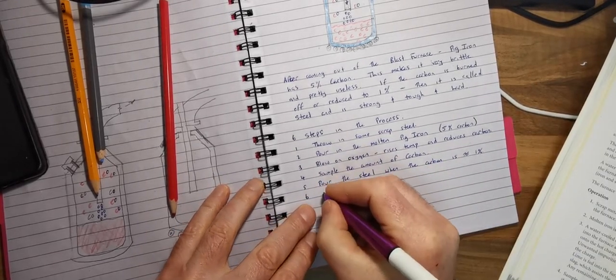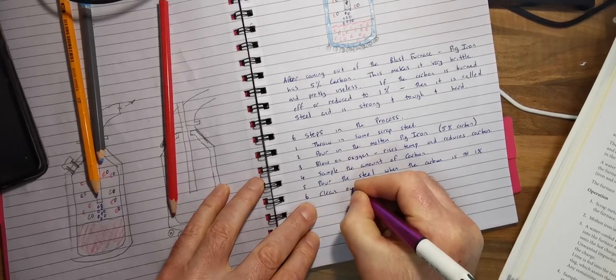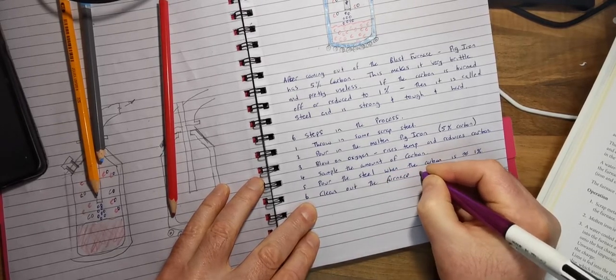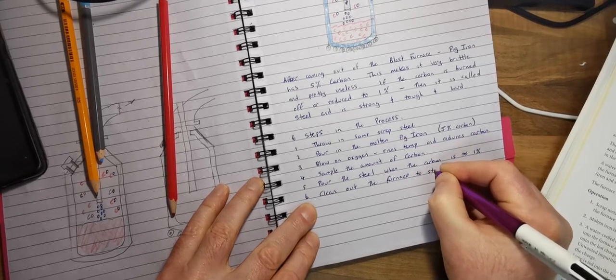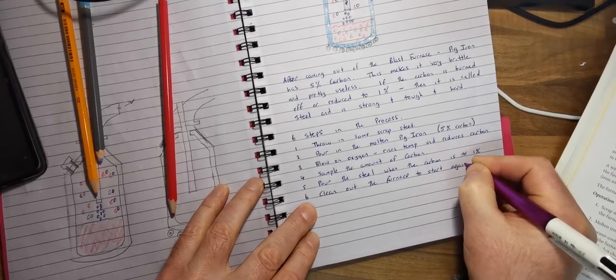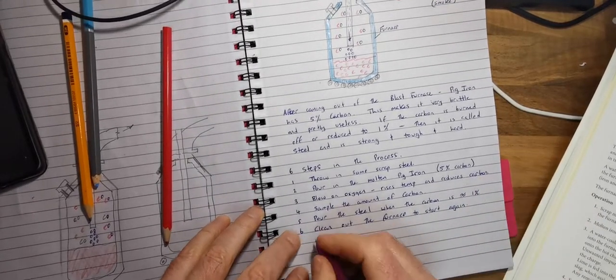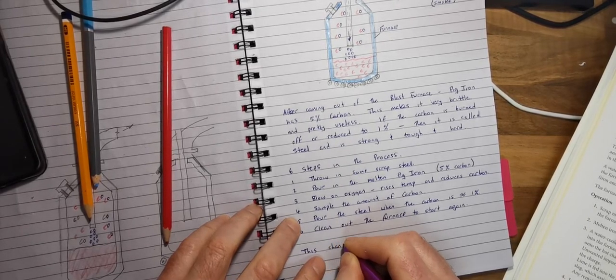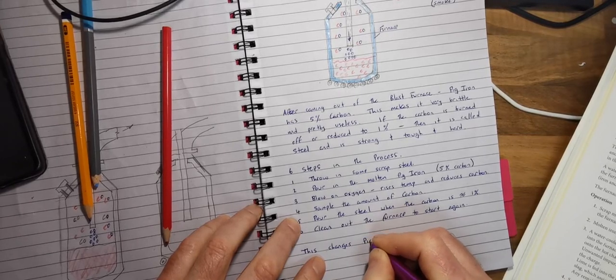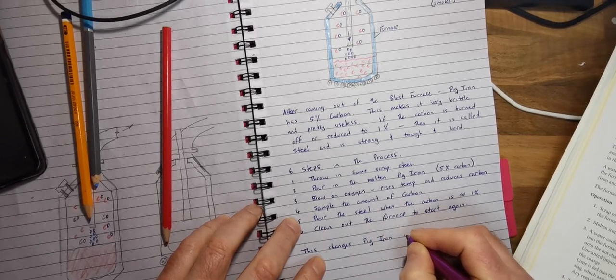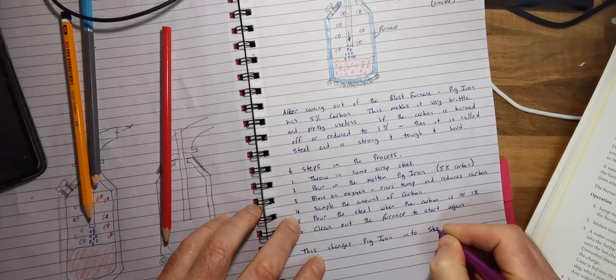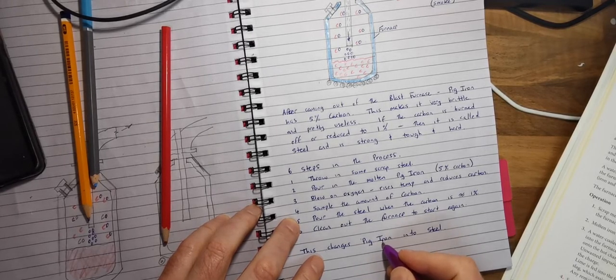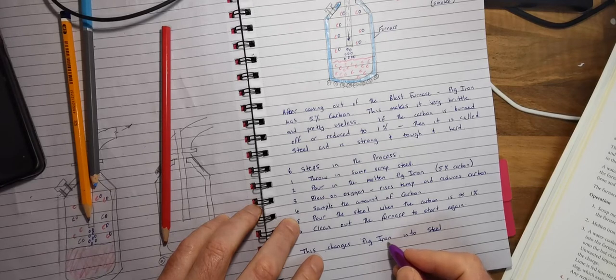Finally, six is clean out the furnace to start again. The important thing to know is this changes pig iron into steel. It's a strange thing really - it shouldn't be called pig iron in a way, it should be called pig steel, because the only difference is a few percentage of carbon really.